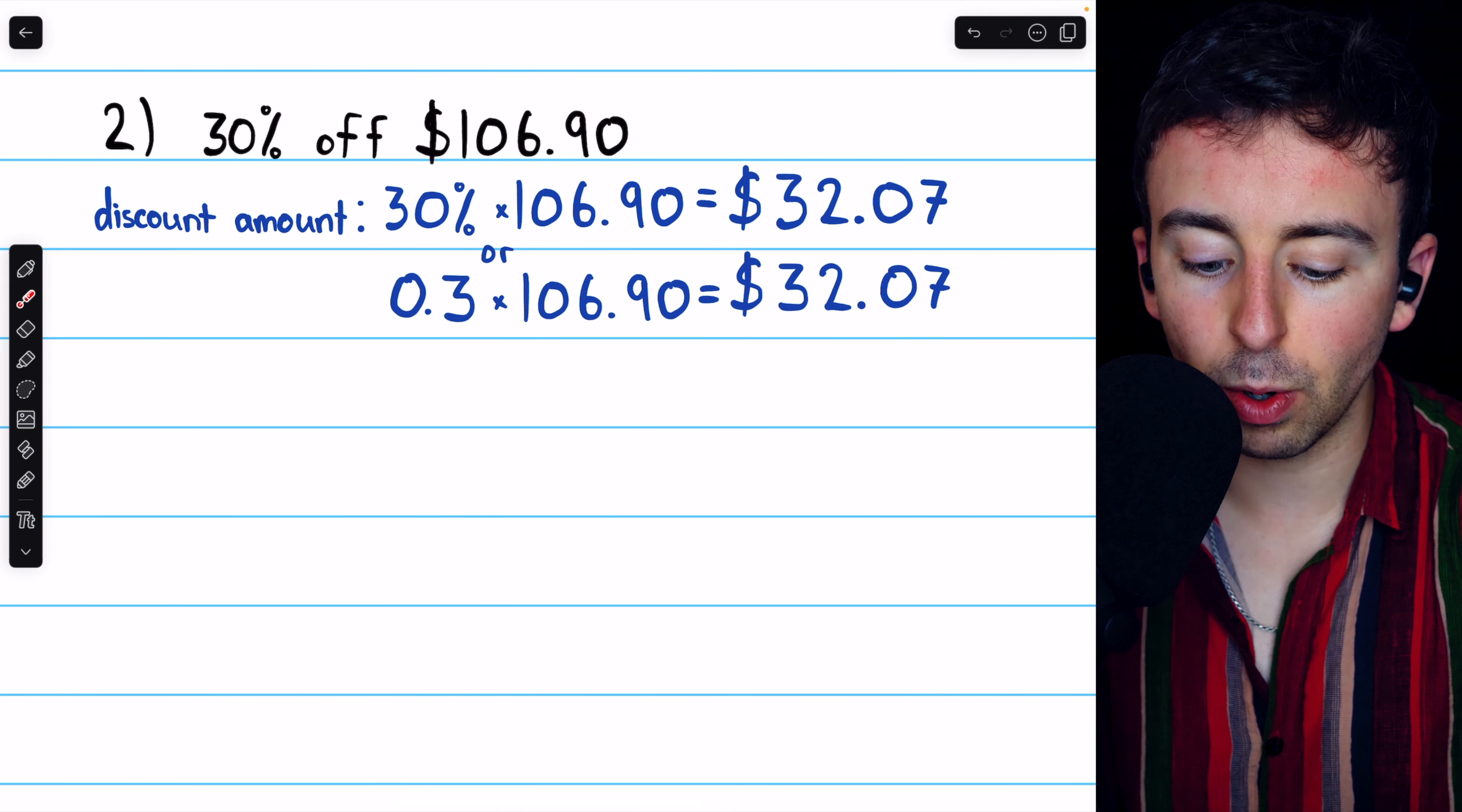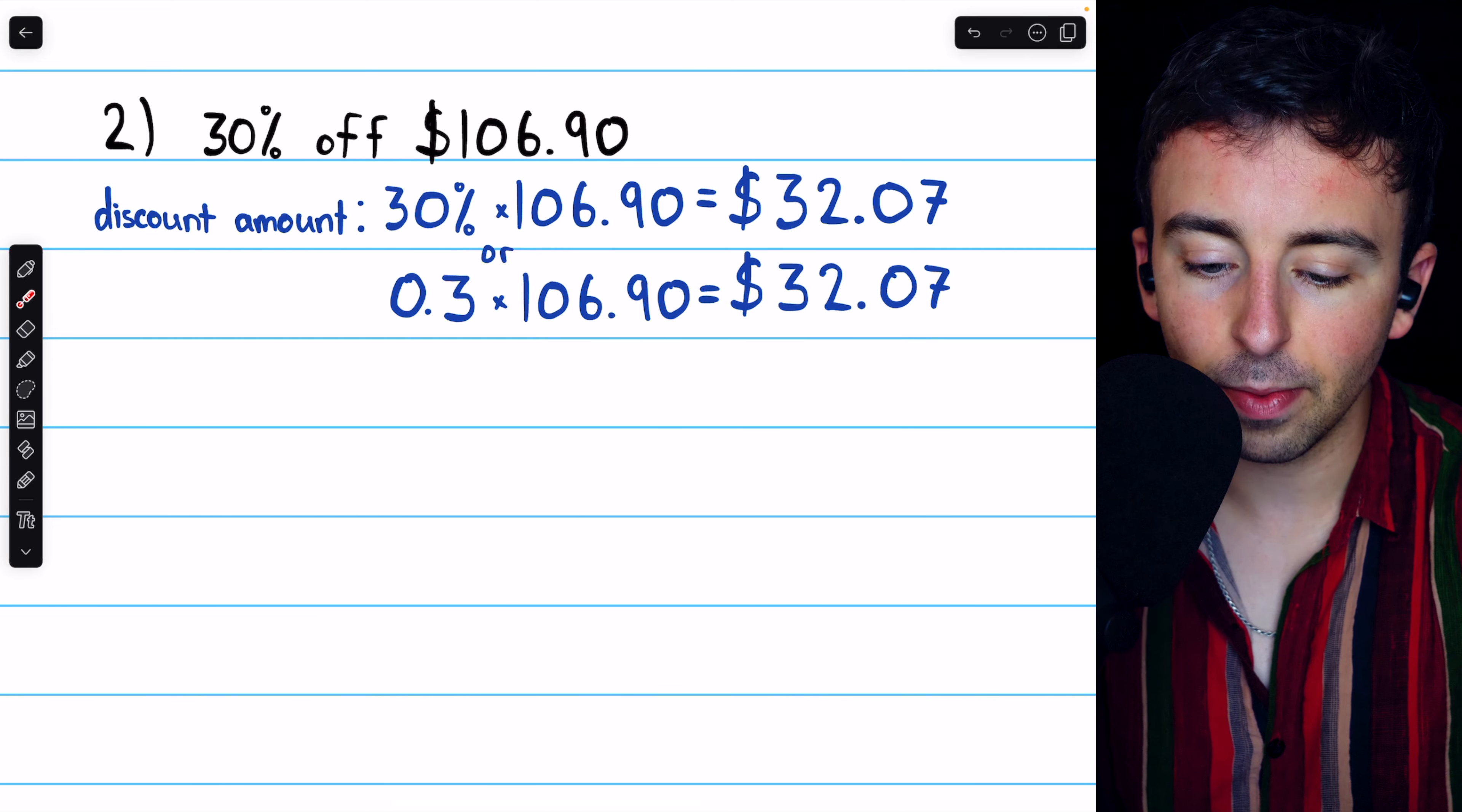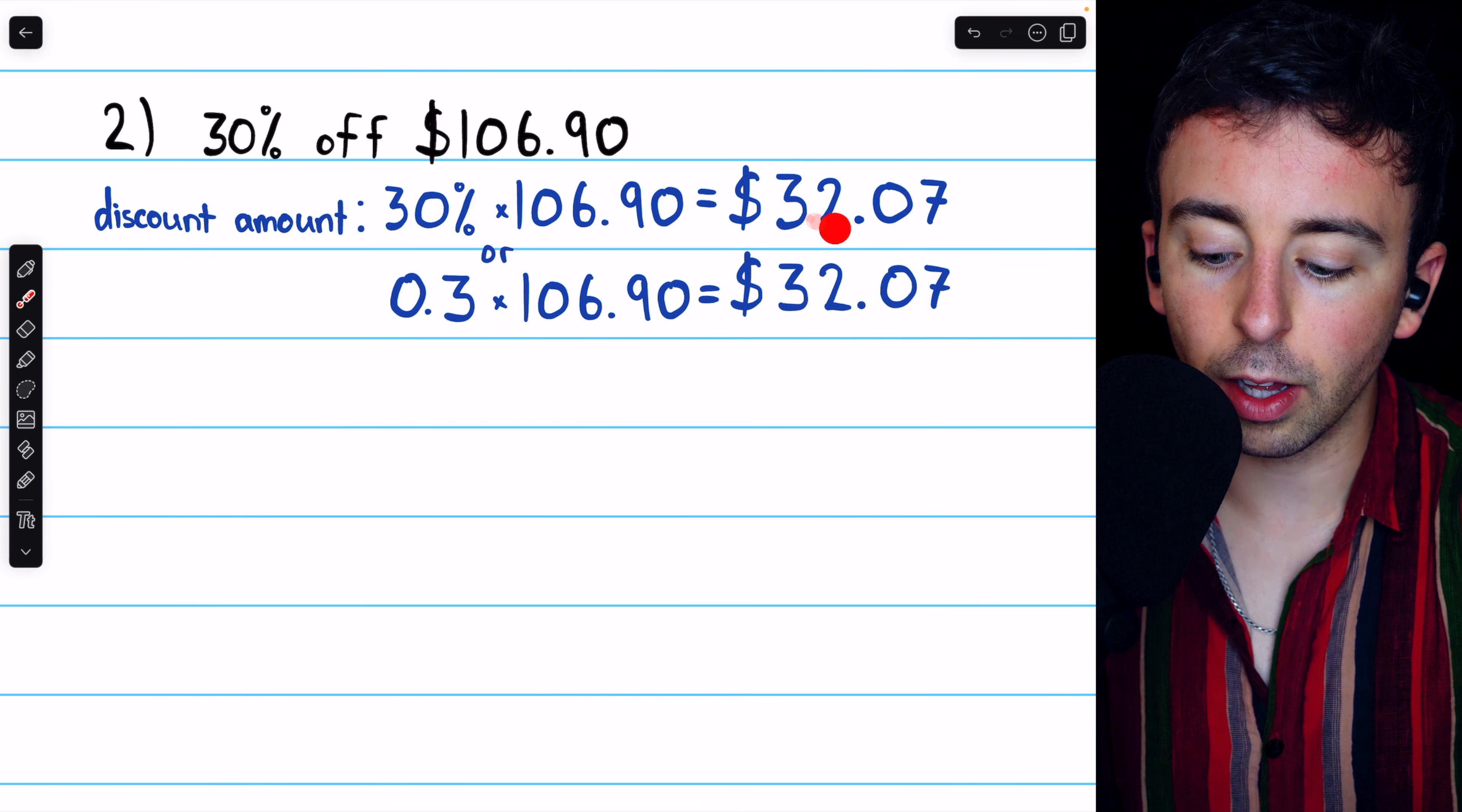Or if we use decimals, we could do it as 0.3, that's 30% as a decimal, 0.3 times $106.90. Either way, we find the discount amount is $32.07.